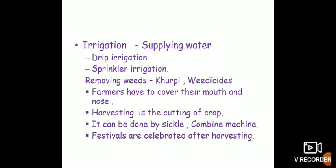Modern methods of irrigation are drip irrigation and sprinkler irrigation. What do you mean by drip irrigation? Each plant gets water drop by drop. And sprinkler irrigation means there will be a pipe at the top with a rotating nozzle connected, through which water is sprayed all over the field.